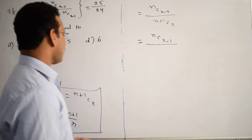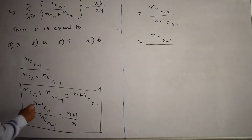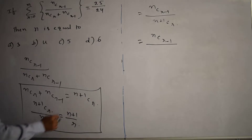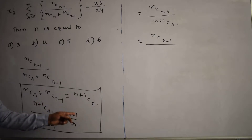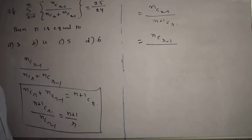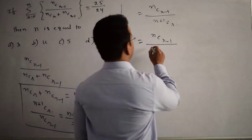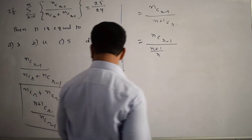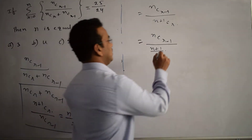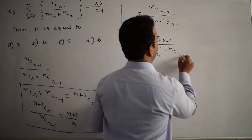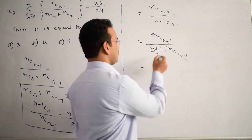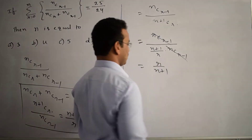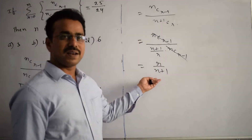Using the second formula, N+1CR equals (N+1)/R times NCR-1. Substituting into the denominator, NCR-1 cancels with NCR-1, and we are finally left with R divided by N+1. This is the simplified value of the fraction.